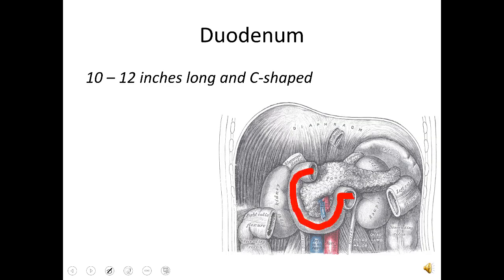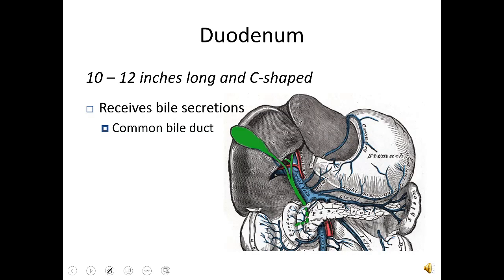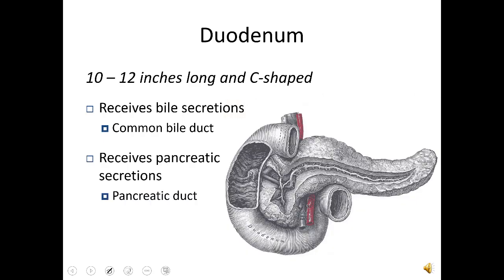The duodenum is just the first 12 inches — a very small C-shaped section that cups around the head of the pancreas. It receives chyme directly from the stomach. The duodenum also receives bile from the gallbladder, which releases bile in the presence of fat down through the common bile duct. It also receives pancreatic secretions — the pancreas makes enzymes that digest carbohydrates, proteins, and fats — which travel down the pancreatic duct and enter the duodenum.